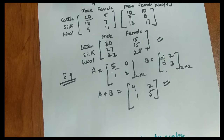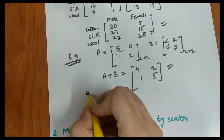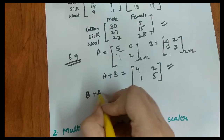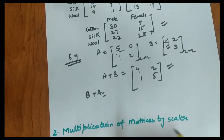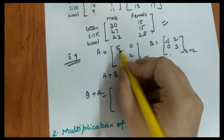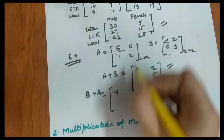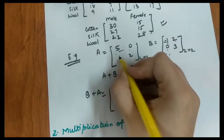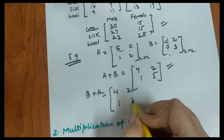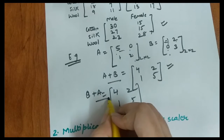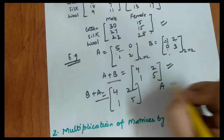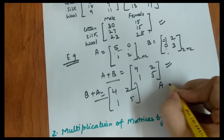One more thing to highlight: in the addition operation, the commutative property holds. That means A plus B equals B plus A. For B plus A: (−1) plus 5 = 4, 2 plus 0 = 2, 0 plus 1 = 1, 3 plus 2 = 5. You can see A plus B and B plus A are equal. So matrix addition follows the commutative law.